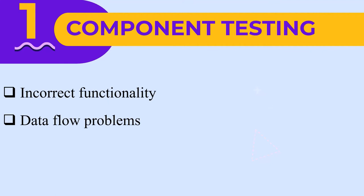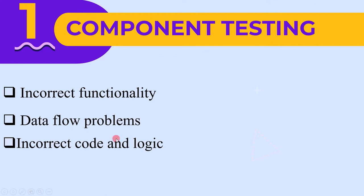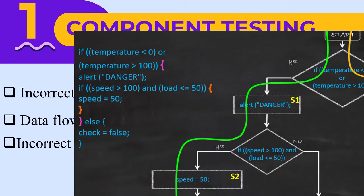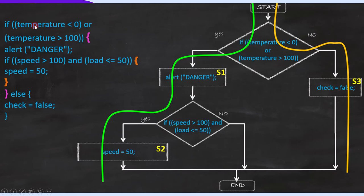In component testing, code is available to the tester and they apply the white box testing technique, which will be covered in detail in chapter 4. For example, given a piece of code for component testing, we can use white box techniques such as statement coverage or decision coverage. We can draw a flowchart since the code is available, and by analyzing this we can find if the implementation is done as per the specification or not. If not, it will result in incorrect functionality.